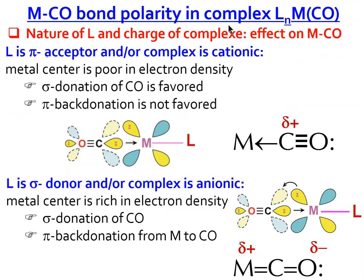Regarding M-CO bond polarity in complex L_n M-CO, the stability of the bond M-CO depends extremely on the nature of ligand L, the nature of metal M, and the charge of the complex. If L is a π acceptor, it will decrease the electron density on M; or if the complex is cationic, M is also poor in electron density. In this case, the donation of the lone pair from carbon to M is favored, and practically we have no π back donation.